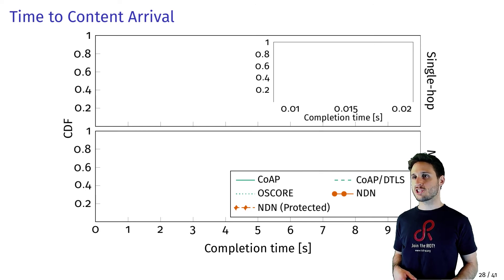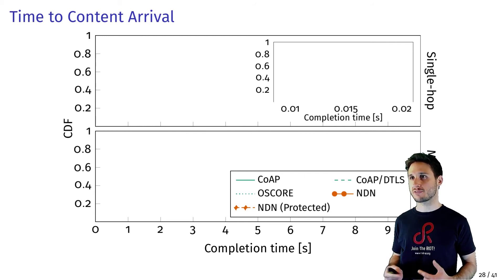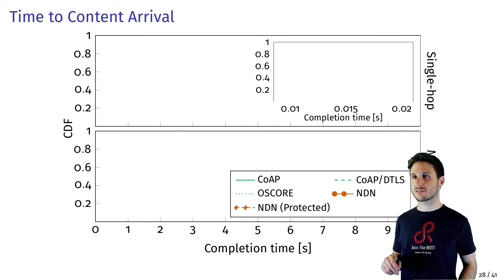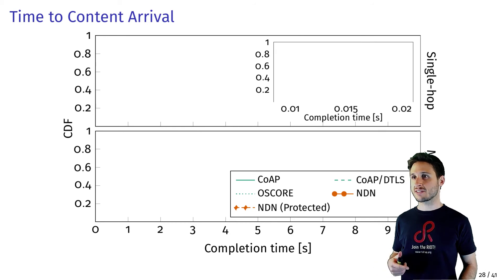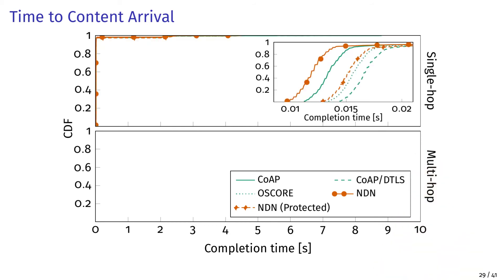In our next evaluation, we measure the completion times for all content requests across all sensor nodes—how long it takes for a request to be satisfied with a response. We configured five retransmissions with a two-second timeout, so requests not satisfied within 10 seconds are considered timed out. In the single-hop case, close to 100% of all requests for all protocols are satisfied in the millisecond range. Unsecured NDN and CoAP show the fastest completion times due to smaller packets, while CoAP over DTLS shows the slowest average of 17 milliseconds.